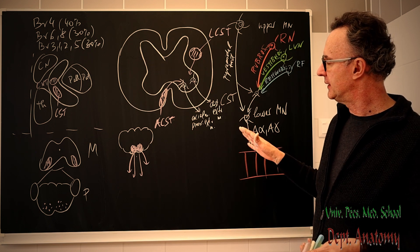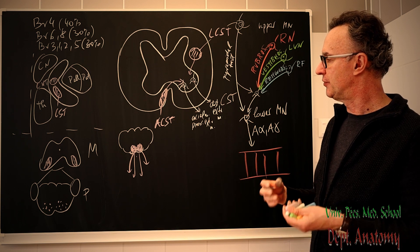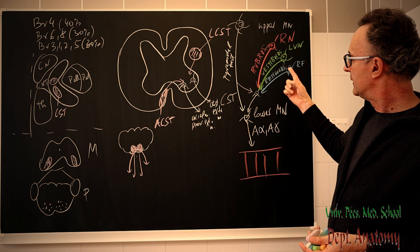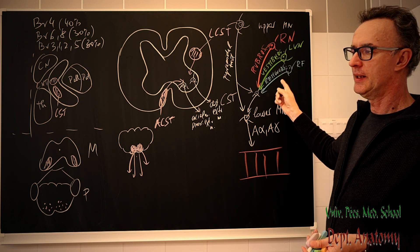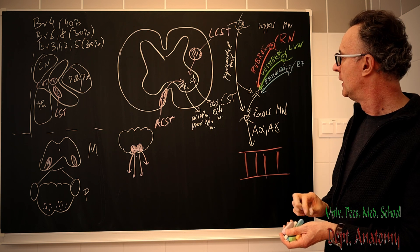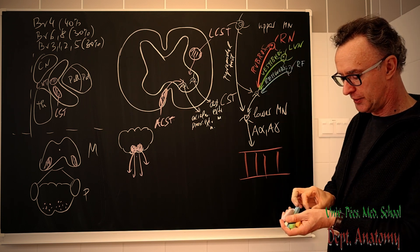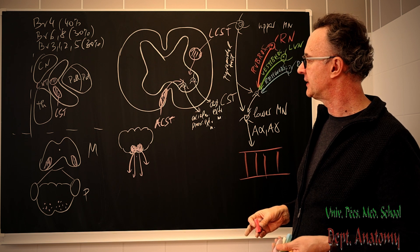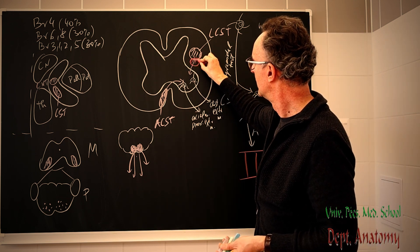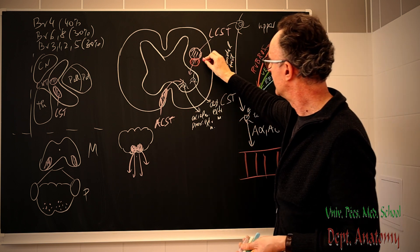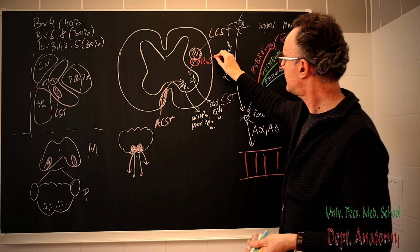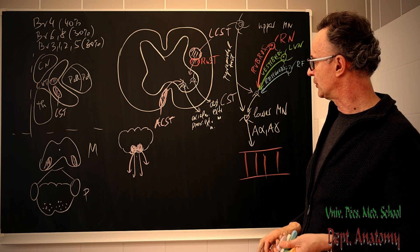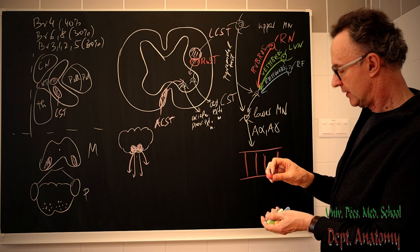The pyramidal tract facilitates the flexors and inhibits the extensors, acting via interneurons. Now, the three major descending extrapyramidal pathways: first is the rubrospinal tract, originating from the red nucleus in the mesencephalon. It crosses immediately and descends just in front of the lateral corticospinal tract, activating the flexors and inhibiting the extensors.